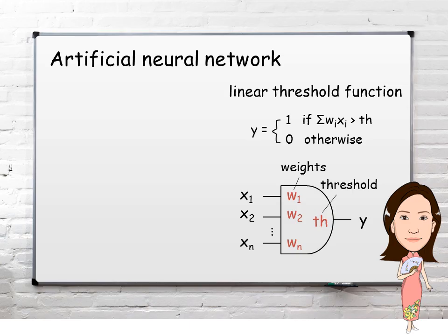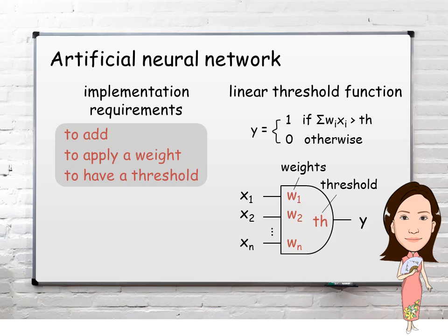In an artificial neural network, each neuron has a number of inputs, each with an arbitrary weight, and an output with an arbitrary threshold. To implement such an artificial neuron, the computing substrate is required to add, to apply a weight, and to have a threshold. To implement a neural network, the output of each neuron should be capable of serving as inputs to other neurons.